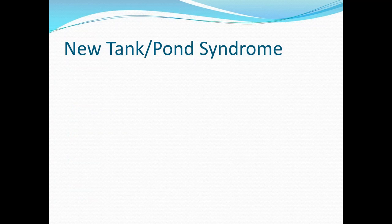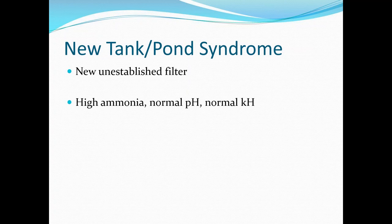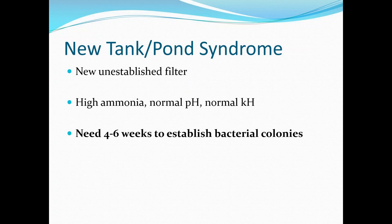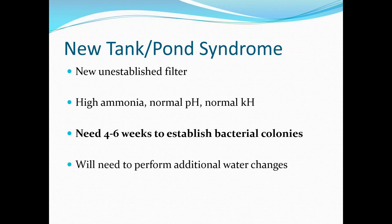On the other side is new tank or pond syndrome. This happens when you have a new unestablished filter — you either replace the filter pad or filter media entirely, or it's a brand new system. With this, you will see high ammonia but your pH and KH will be normal. It will need four to six weeks to establish bacterial colonies — this is temperature dependent. In summer you're looking at about four weeks; coming into winter, closer to six weeks. In order to correct this, you will need to perform additional water changes, up to 50%, and definitely don't mess with your filters until that four-week period is up.